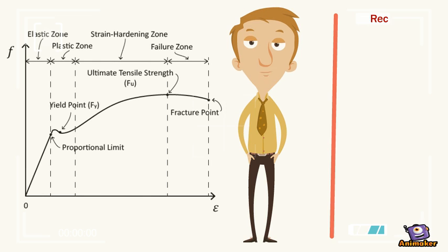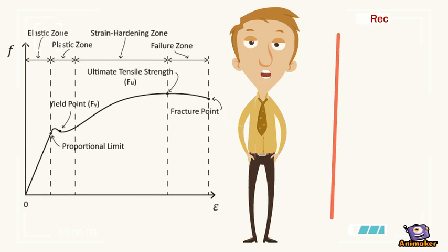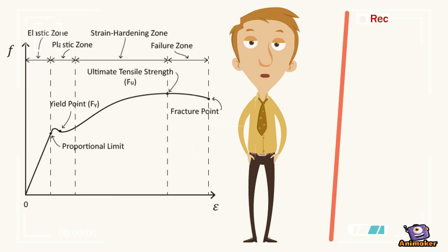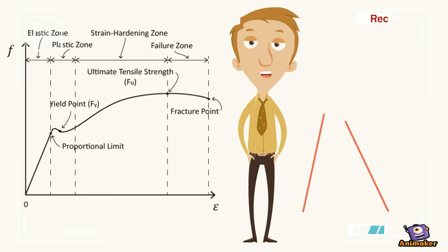The object is still elastic until the yield point, after which it will lose its elasticity. It can still stretch until the point called ultimate tensile strength. A little more and the object will stretch out and break at the fracture point.